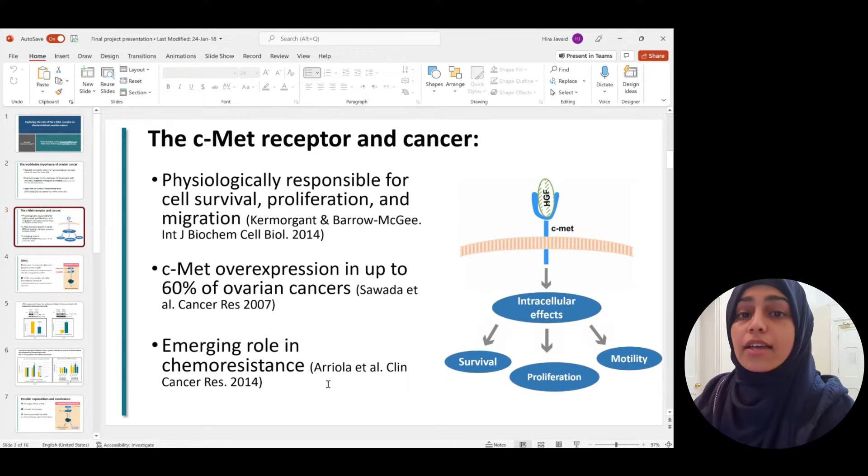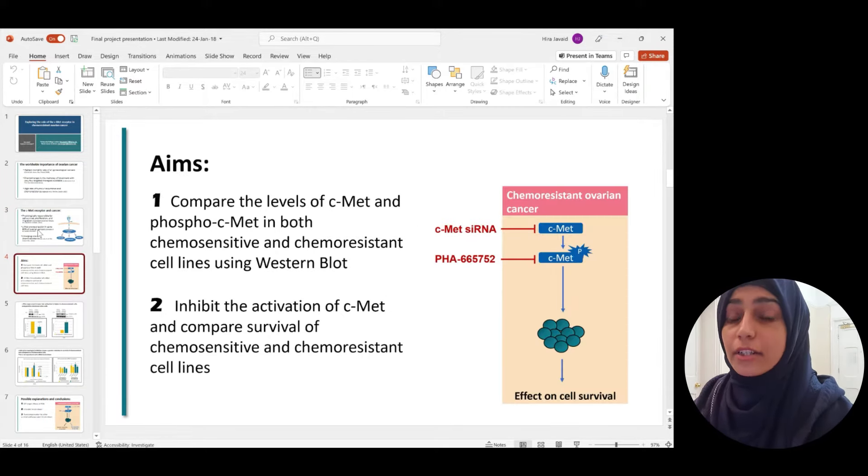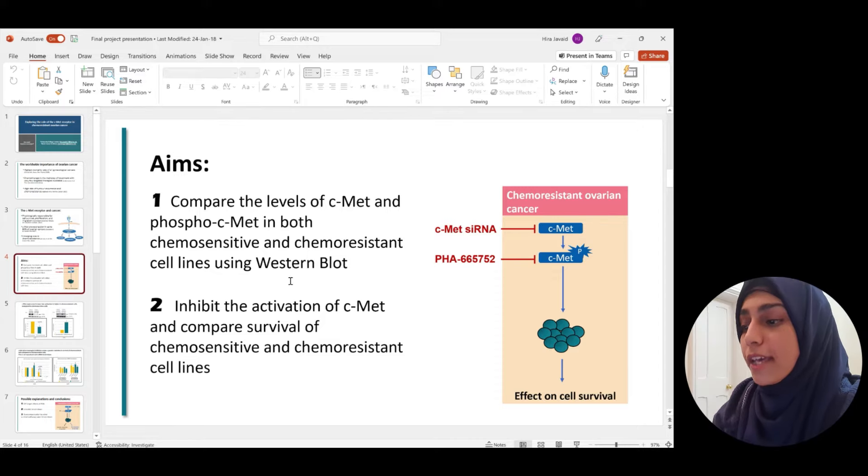So now that I had given them the background of the project, I then went into my aims, and I clearly articulated what it was that my project was aiming to achieve. So again, as you notice, I have one picture on the side, which kind of tells them exactly what I'm going to do. Again, two bullet points. It was so simple.